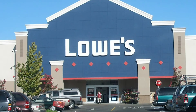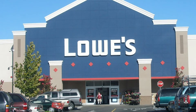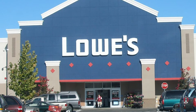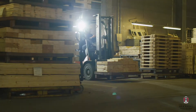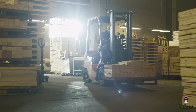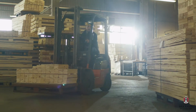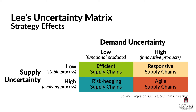For example, consider Lowe's. They're a home improvement retailer that sells a wide variety of products. One of their best-selling products is lumber. Lumber is a functional product that's existed for decades. Lowe's sources lumber from hundreds of well-established suppliers. Therefore, demand uncertainty and supply uncertainty in this category are quite low. With these uncertainty characteristics, Professor Lee's matrix would suggest that Lowe's use an efficient supply chain strategy. It's pretty clean and simple.